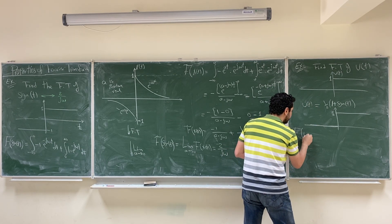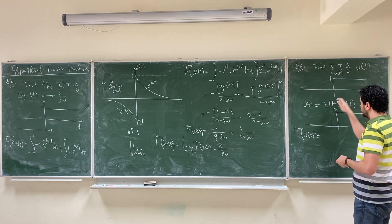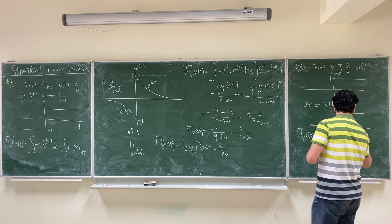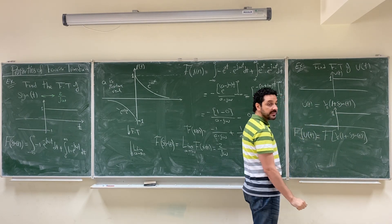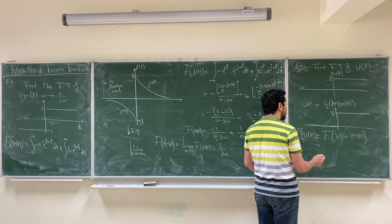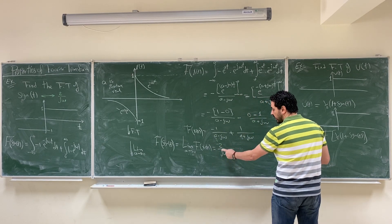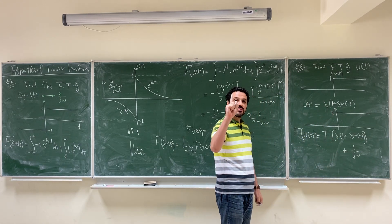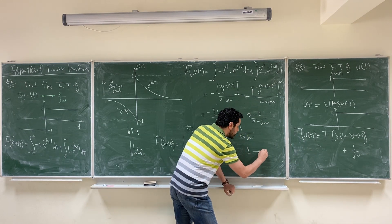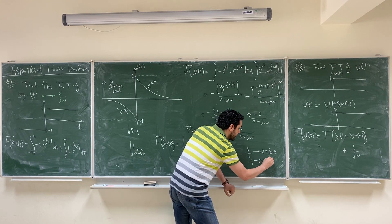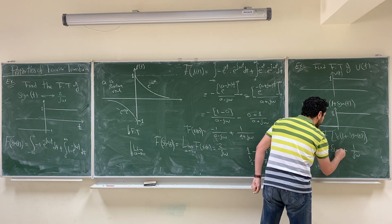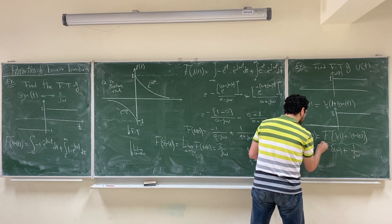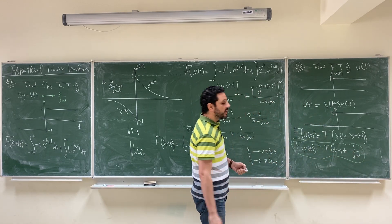The Fourier transform of the unit step equals the Fourier transform of ½·(1 + sgn(t)). The Fourier transform of ½·sgn(t) is (1/2)·(2/(jω)) = 1/(jω). The Fourier transform of 1 is 2π·δ(ω), so the Fourier transform of ½ is π·δ(ω). Therefore, the Fourier transform of the unit step is 1/(jω) + π·δ(ω).